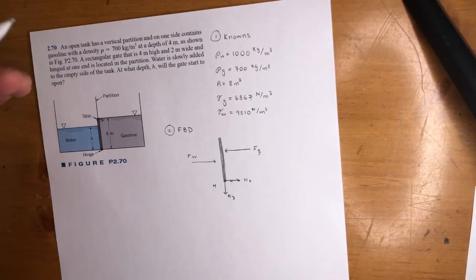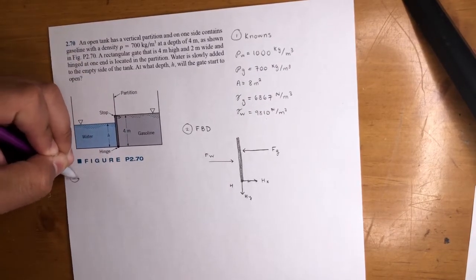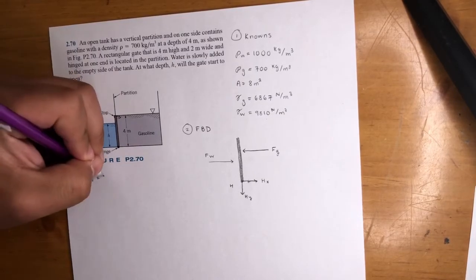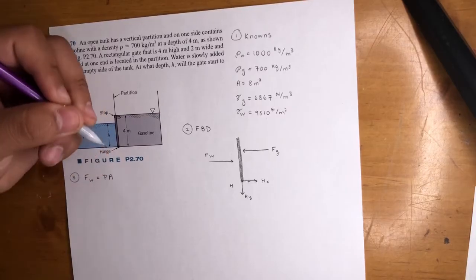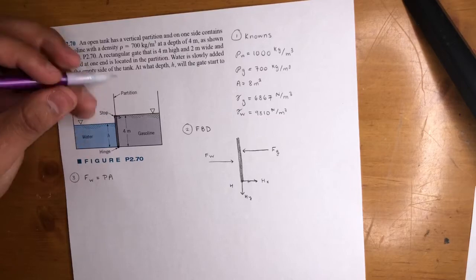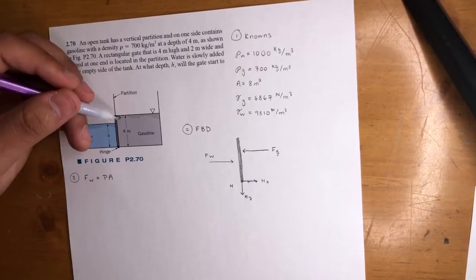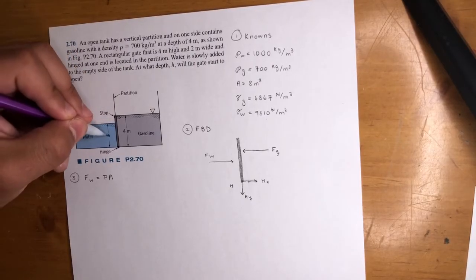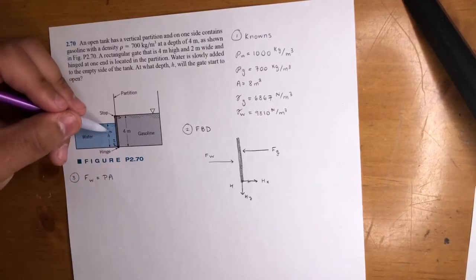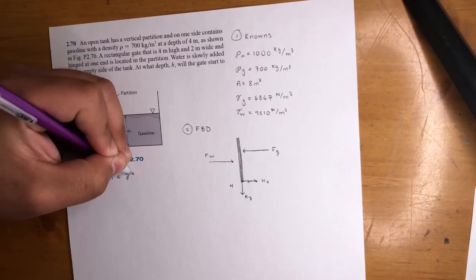So next step, we want to start off by finding the forces, just like we did in the other problem. We know the force of water is equal to pressure times area, right? When we fill it up, it's not exactly four times two, the area, right? Because we don't know how much height is required to push the hinge or the partition right there. So it's going to be H times two. We know the width is two. It's going into the paper times two at some height. So just keep that in mind.